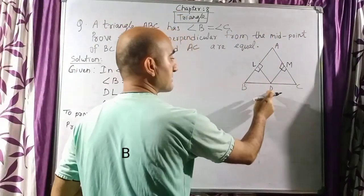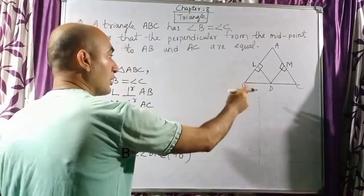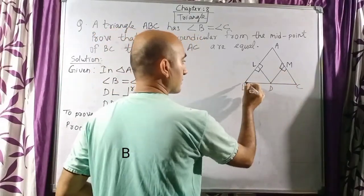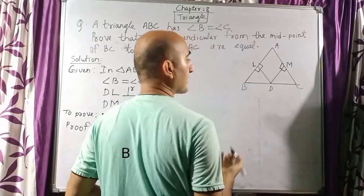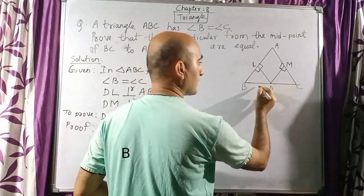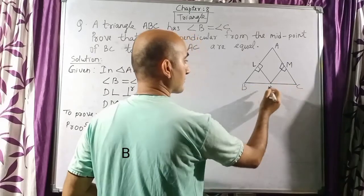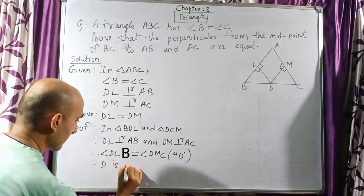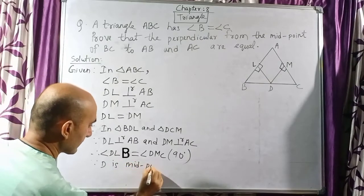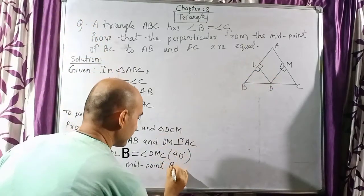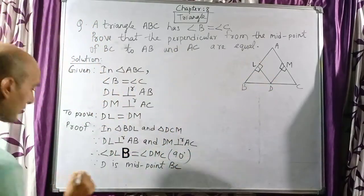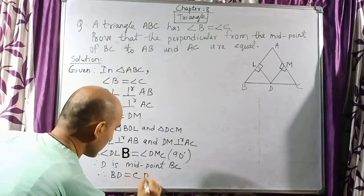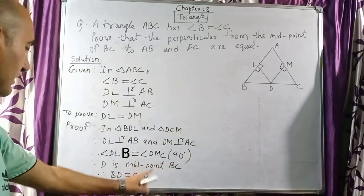Second condition: D is the midpoint of BC. Since D is the midpoint, the two segments are equal. For example, if BC is 6 cm and D is the midpoint, then BD = 3 cm and CD = 3 cm. Therefore BD is equal to CD.